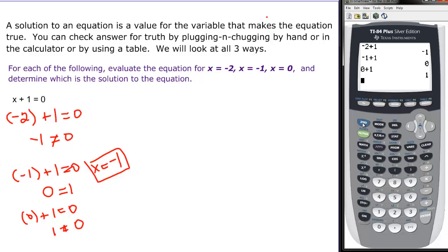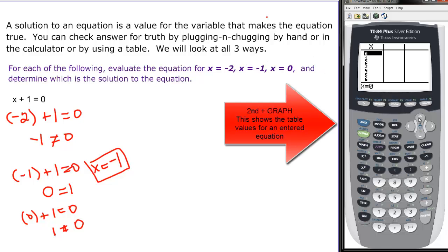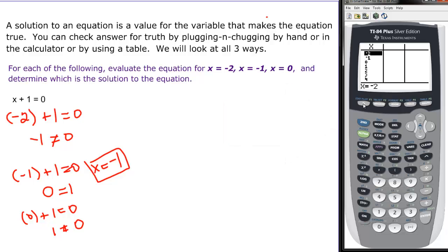And one last way to do it. If we look at our table, so we do second graph. And my table starts at 0. I need to look at negative 2 and negative 1. So I'm going to go backward. My up arrow will take me backward. And I need to put my equation in there. So I come back. Notice there was nothing in my y2. So I come back in here and I put x plus my 1. Now I go look at my table.